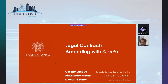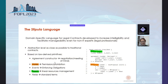Thank you very much. My name is Alessandro Parenti. I'm very glad to be here, even though only remotely. Today I'm going to present a work I did with Professors Cosimo Laneve and Giovanni Sartorra about a method to implement contract amendment using the Stipula language. Let's start with a brief overview of what the Stipula language is. Stipula is a domain-specific language specifically developed for the creation of legal computable contracts, whose main goal is to provide a language which is intelligible and easy to manage and use for even non-IT experts, such as legal professionals.